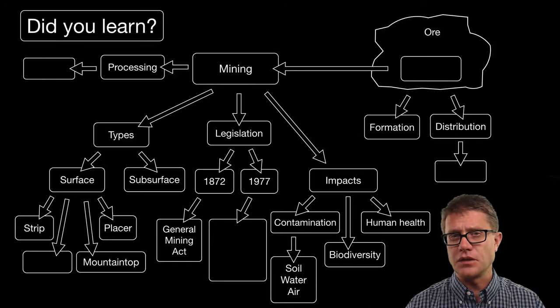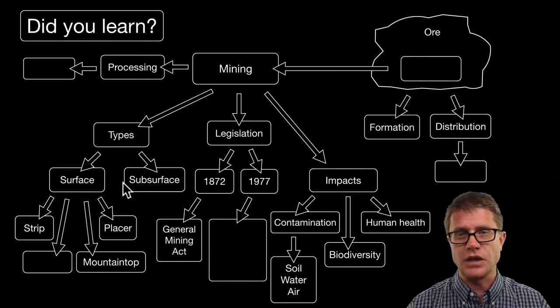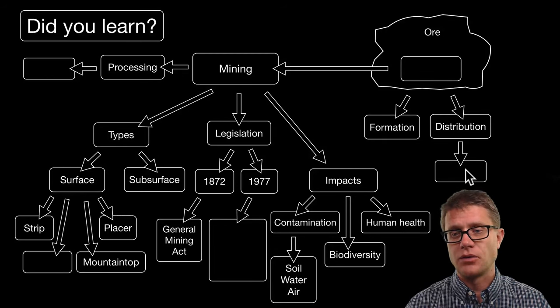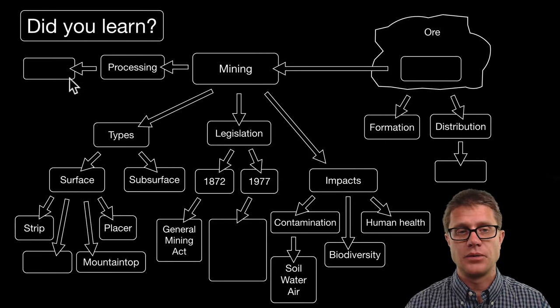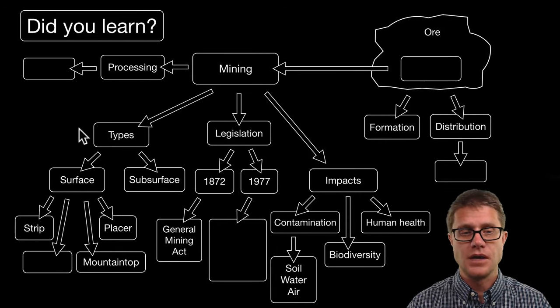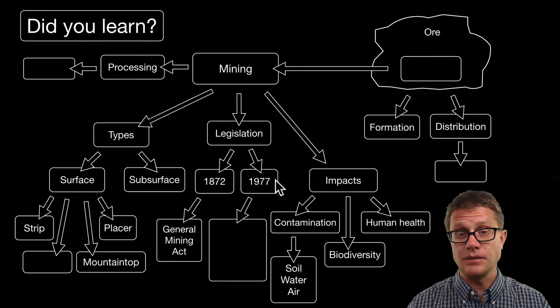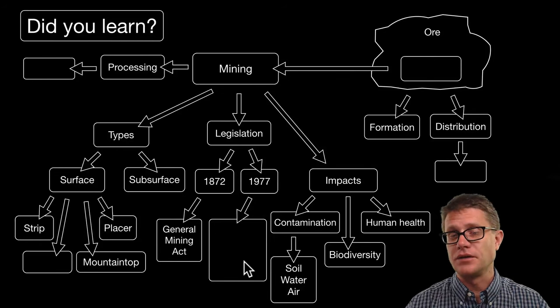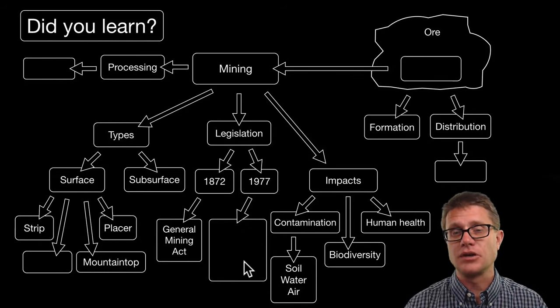So did you learn the following? Could you pause the video at this point and fill in all the blanks? I will try to. Again what we are looking for are valuable minerals. And so the reserves are going to be where they are found. We eventually create what are called tailings. Surface mining could be strip mining. We also have open pit mining. In 1977 we had SMACRA put forward as a way to govern coal mining and increase reclamation.